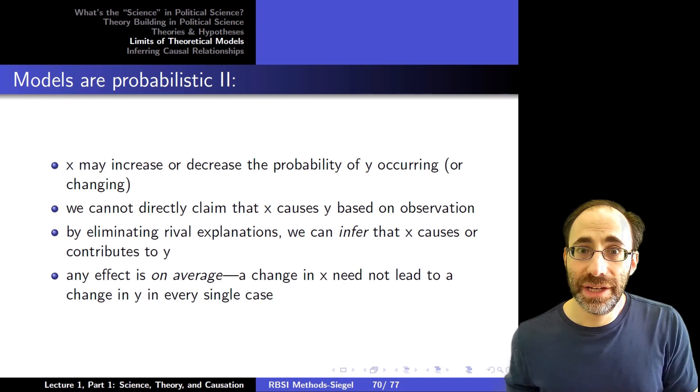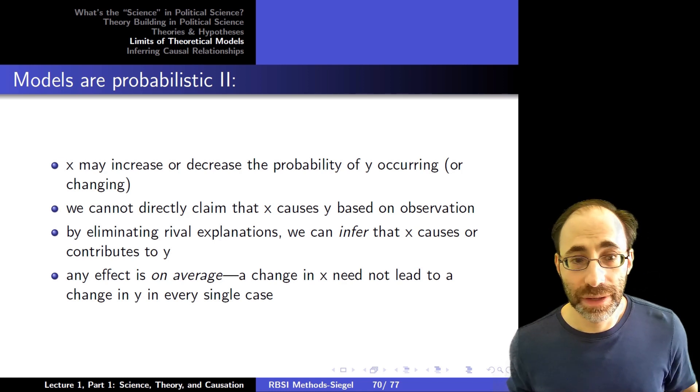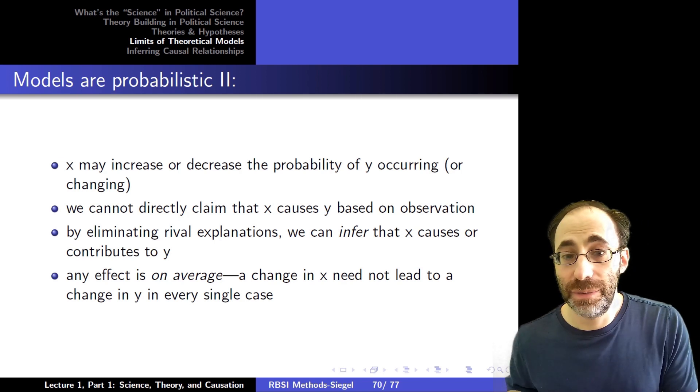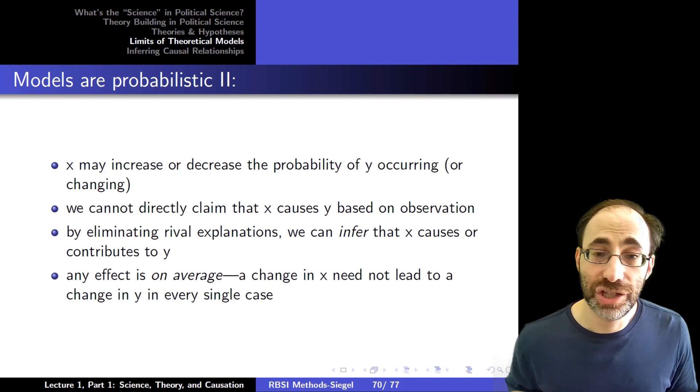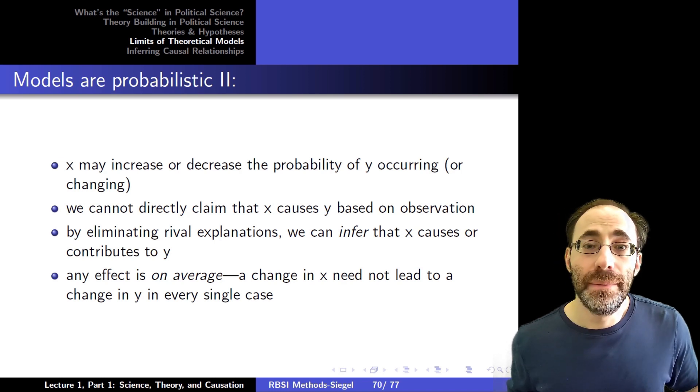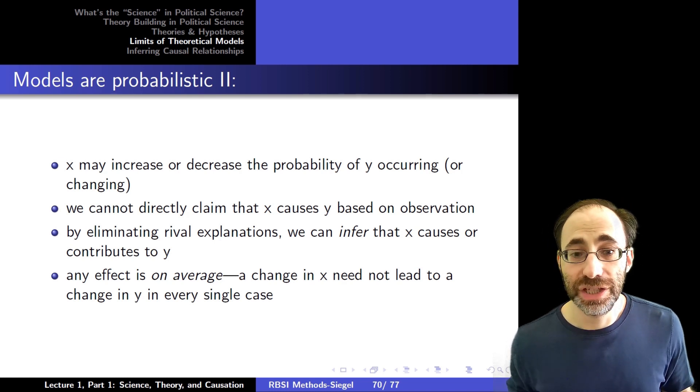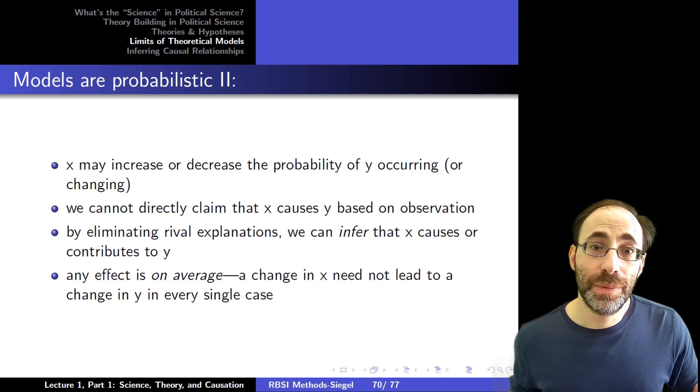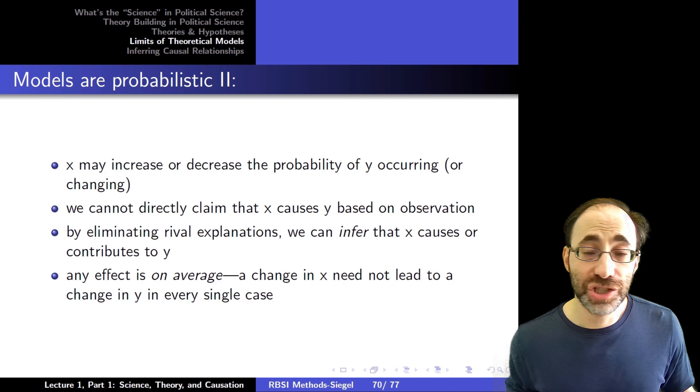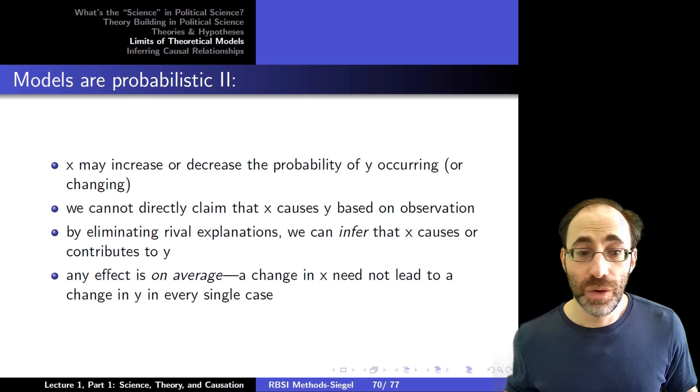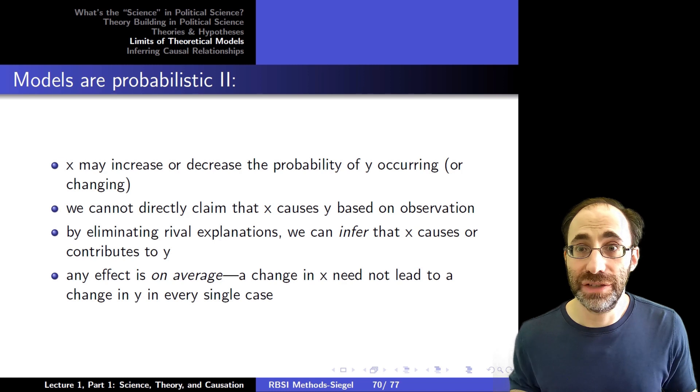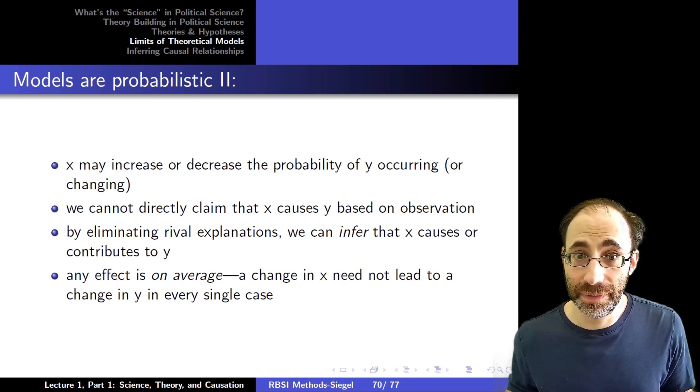The fact that our models are probabilistic has strong consequences though. X may increase or decrease the probability of y occurring. But we can't just directly claim that x causes y just based on observation. We could if these are all deterministic. If x always changed y in the exact same way, we could just say, upon observing how x changed y, we now know how x affects y. Because it was going to happen the same way every single time.